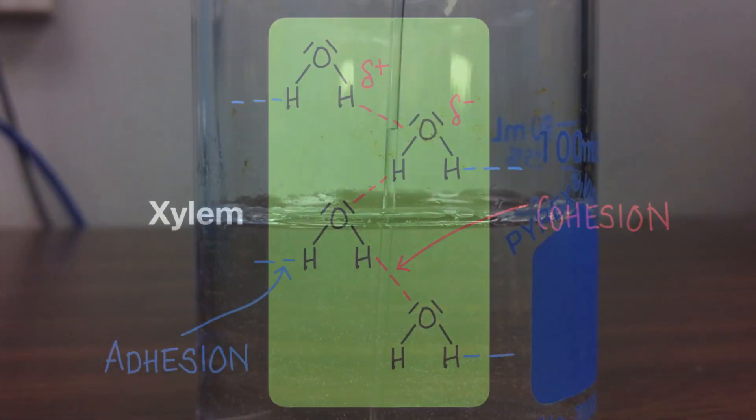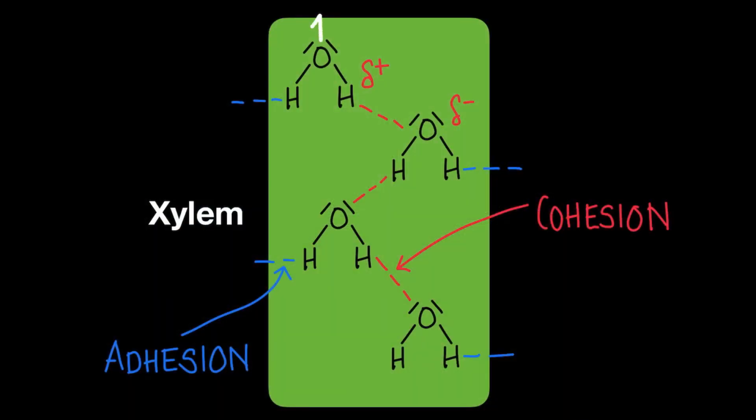As a result of both cohesion and adhesion, a tension is created within the continuous column of water that runs from the roots all the way up to the leaves. This allows the water to move up and through the plant.